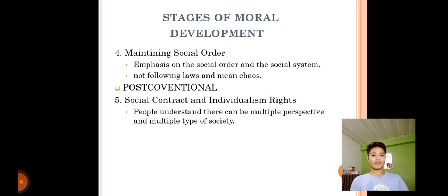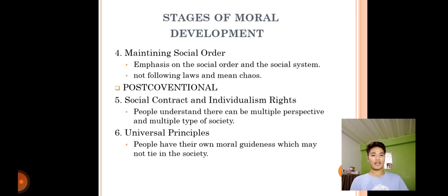The last level is post-conventional. Stage five is the social contract and individual rights — people understand there can be multiple perspectives and multiple types of society. Stage six is universal principles, where people have their own moral guidance which may not be tied to any particular society or law.